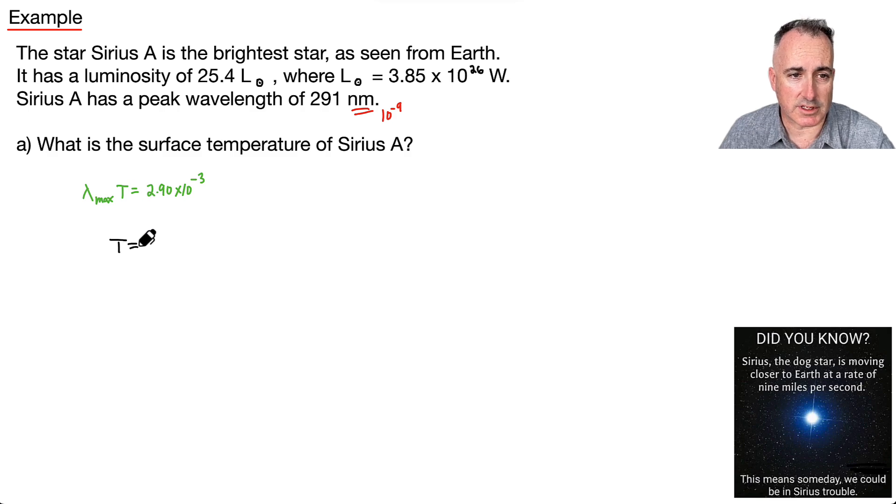So let's solve for T first of all. We'll get T by itself. So it's going to be equal to 2.90 × 10⁻³ all divided by λₘₐₓ, which in this case is 291, but it's nanometers, so it's times 10⁻⁹.